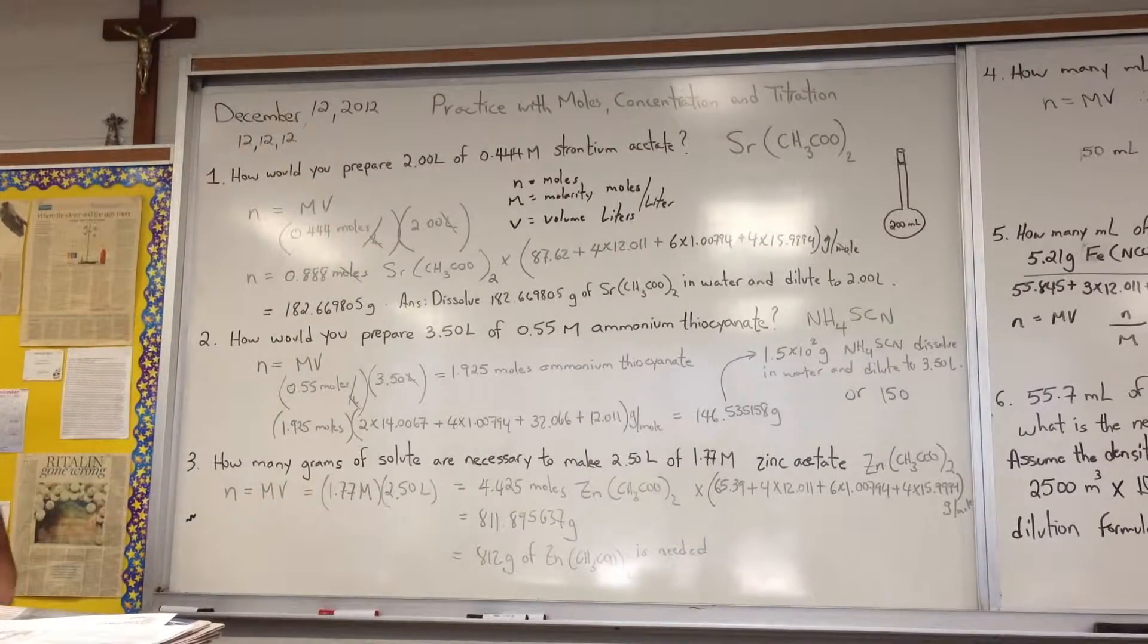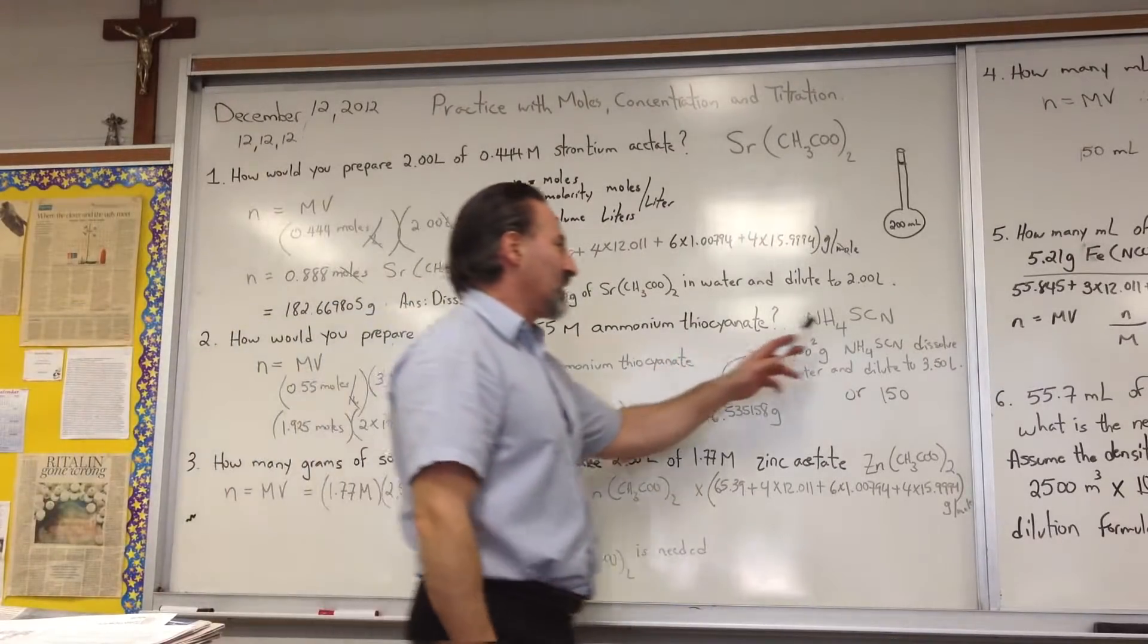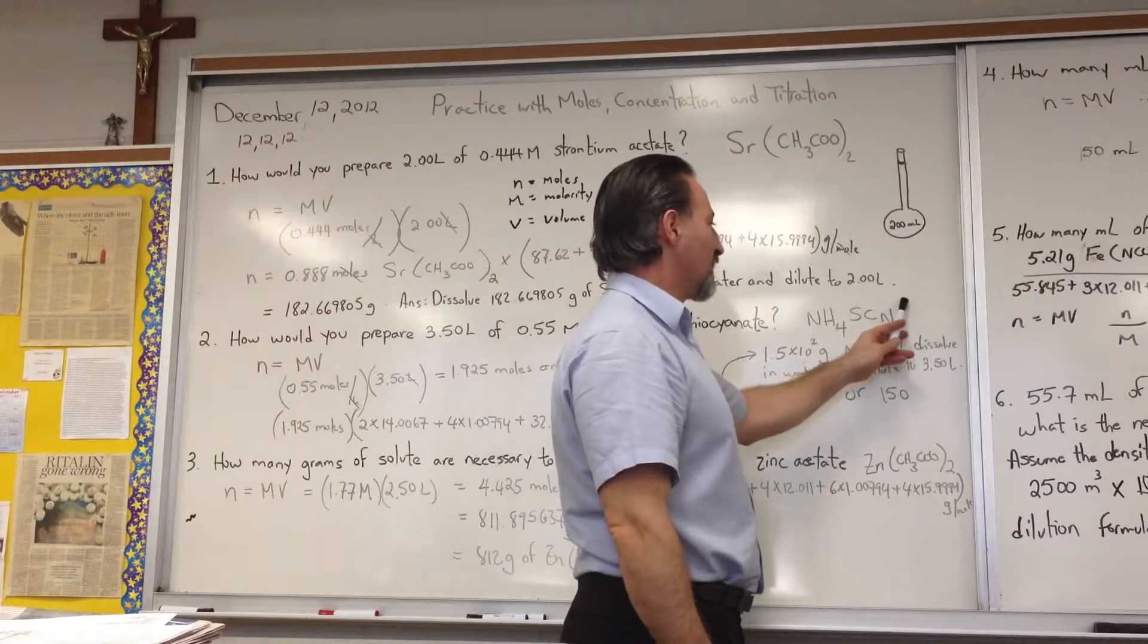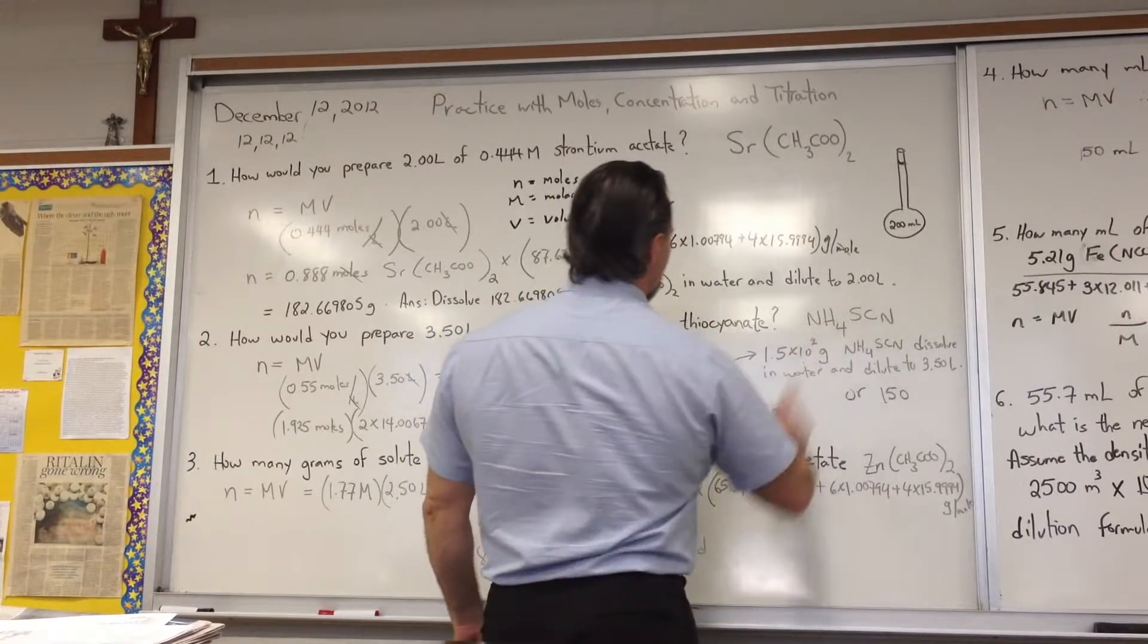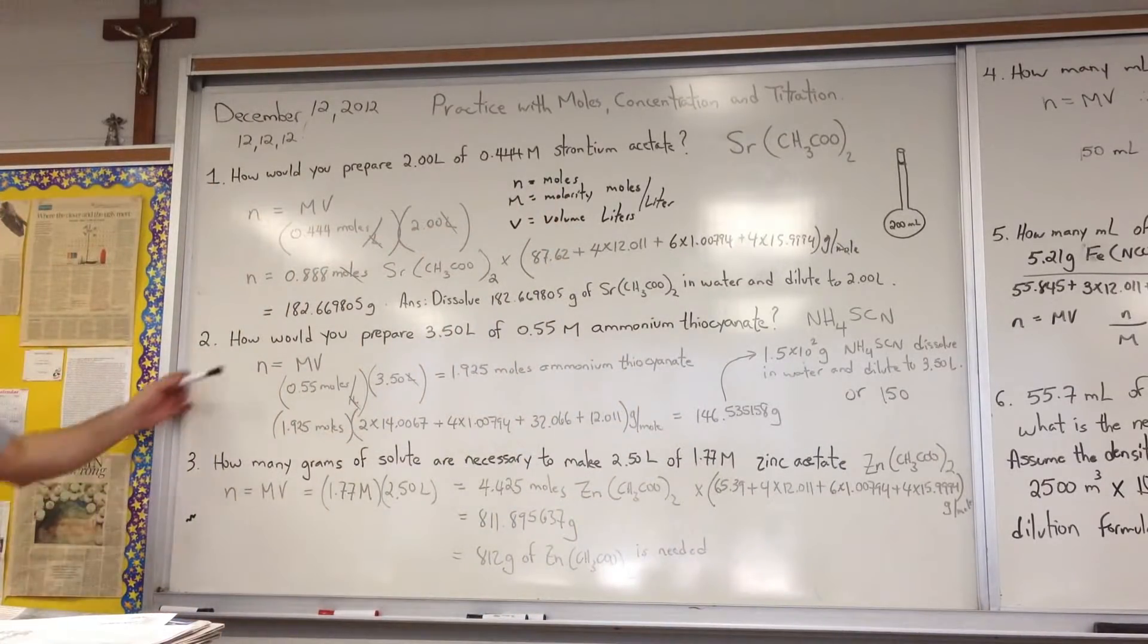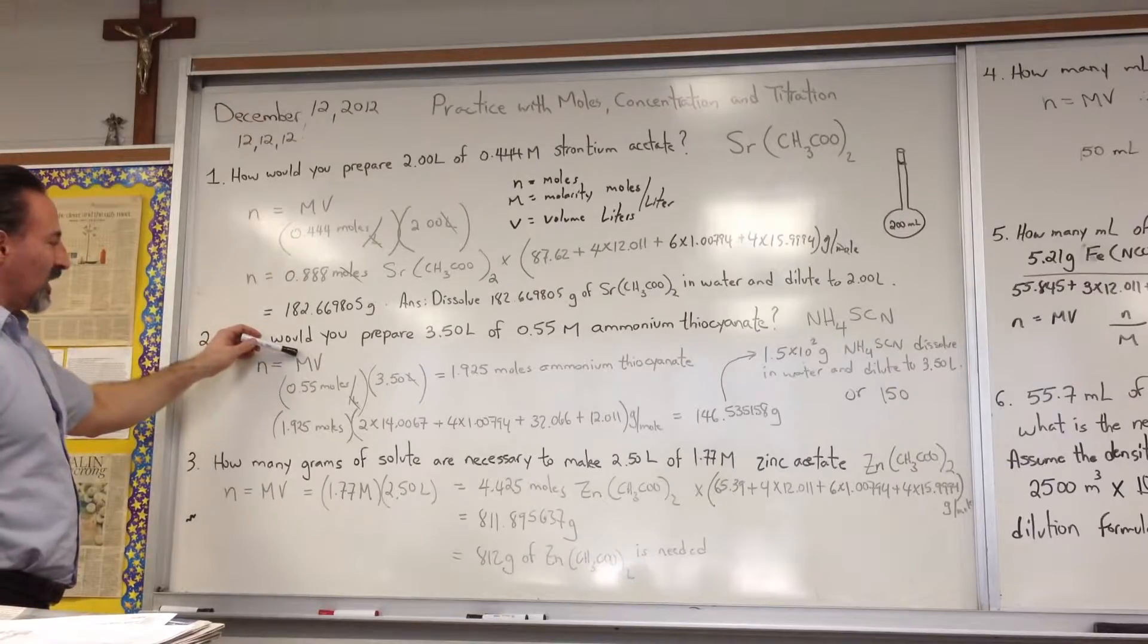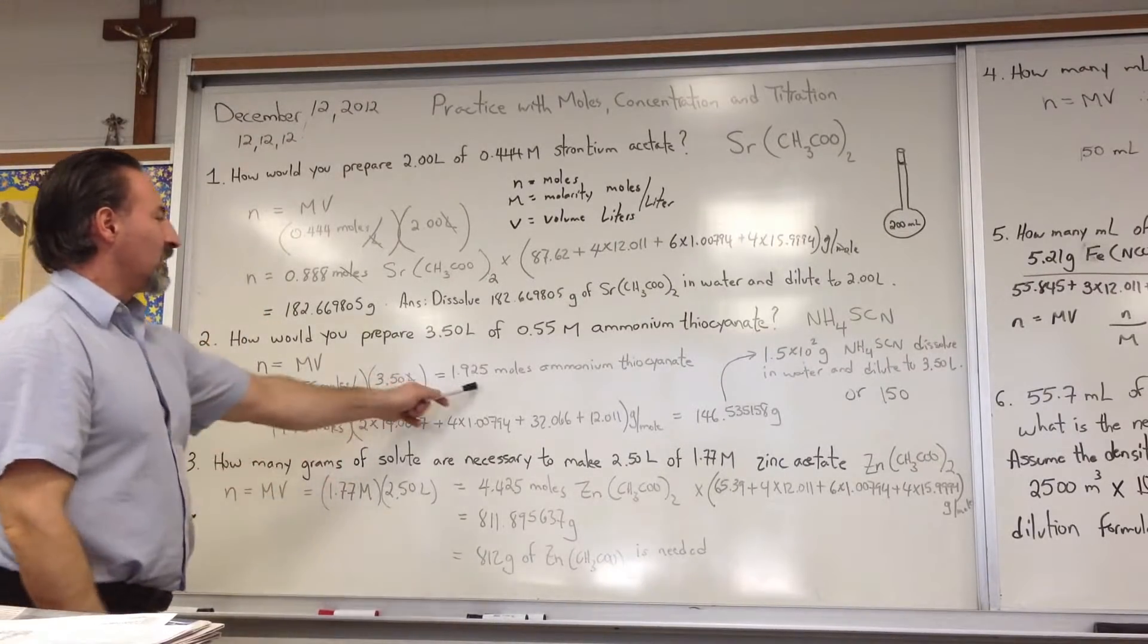Second question is, how would you prepare 3.5 liters of 0.55 molar ammonium thiocyanate? Again, you have to know what the formula of thiocyanate is, it's SCN minus, it's got a negative one charge. Ammonium has a plus one charge, so you put one of each of these polyatomic ions to form ammonium thiocyanate. We use the same formula. The number of moles is equal to the molarity of the solution times the volume of the solution. And you notice how the liters cancel, and it gives you an answer in moles.